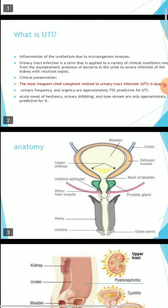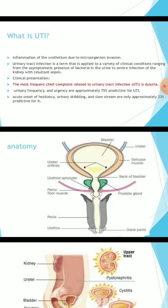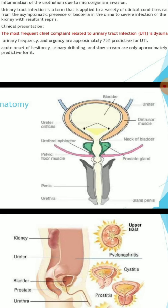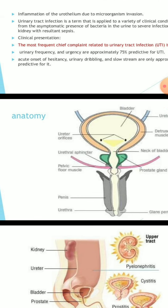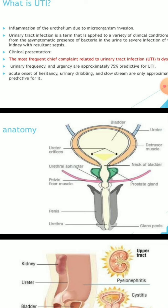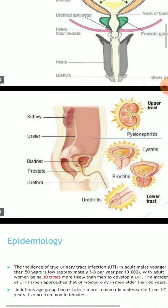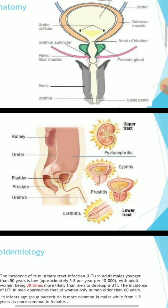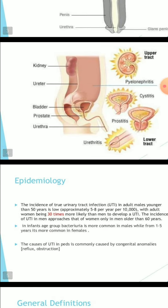Next is anatomy. UTI involves the bladder, urethral muscles, neck of bladder, prostate gland, glans penis, urethra, pelvic floor muscles, and urethral sphincter. The diagram shows: kidney, ureter, bladder, prostate, urethra — with prostatitis and urethritis as lower tract and cystitis as upper tract. You can see the icon in the diagram.